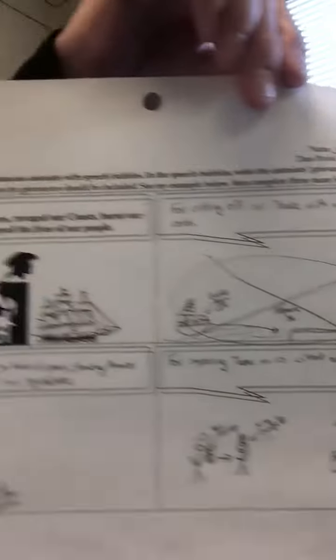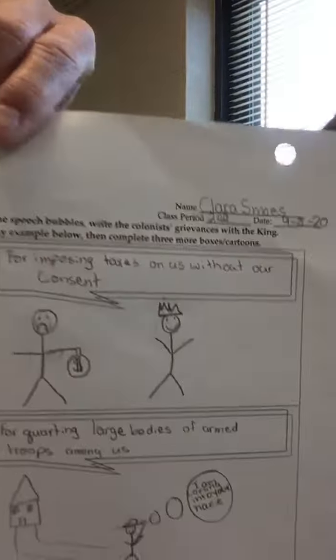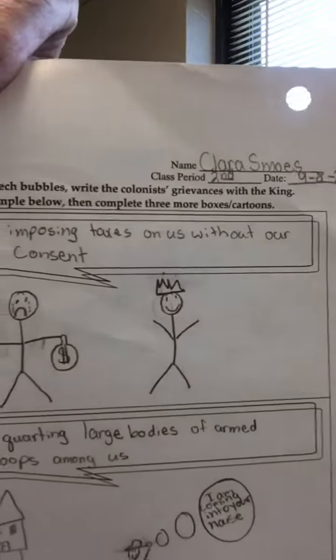Some of these have color, and some of them don't. I want you to see that this is a really simple assignment. You've just got to read the grievances, find a few you understand — like cutting off trade with the world or imposing taxes without their consent — and then draw some illustrations to go along with those.